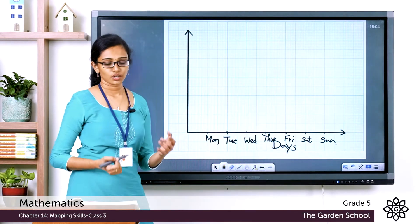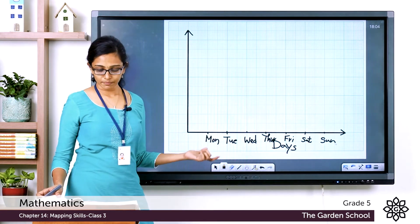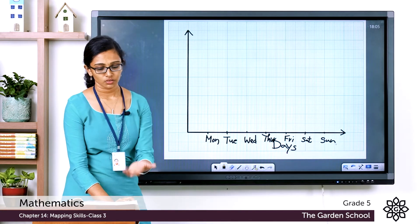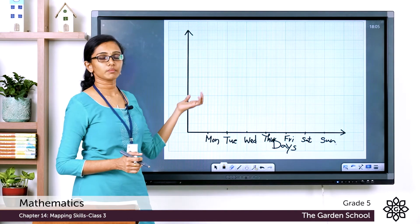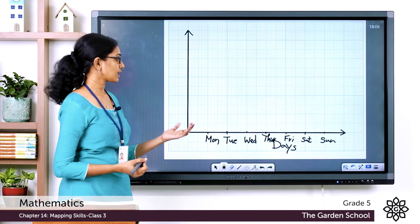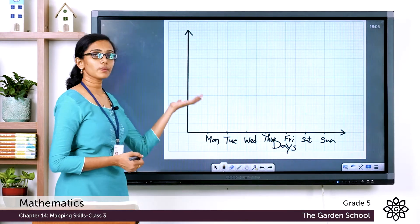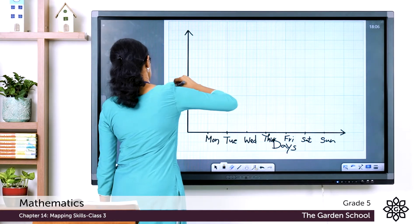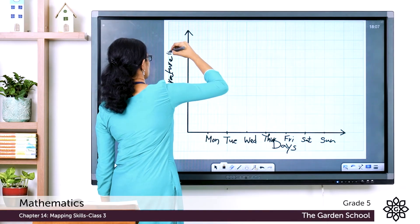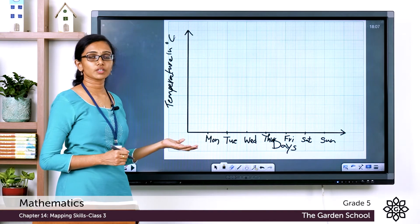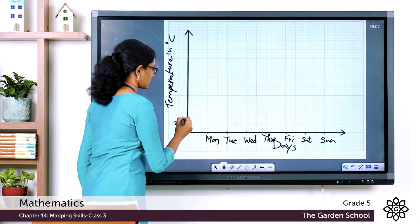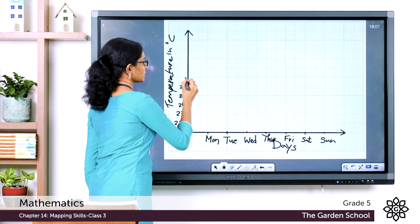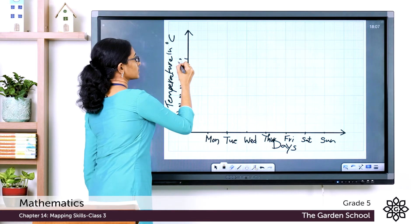On the y-axis we need to mark temperatures ranging from the lowest value of 22 degrees to the highest value of 27 degrees. Label the y-axis as temperature in degree Celsius. I'm going to mark temperatures at every 0.5 centimeter spacing: 22, 23, 24, 25, 26, 27, 28, 29, 30 and so on.